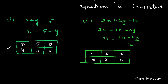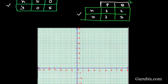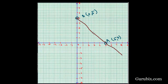We label the points: this is point A and this is B for equation 1, and point P and Q for equation 2. From the table of equation 1, the points are (5, 0) and (0, 5). Point A is (5, 0) and point B is (0, 5). We draw a straight line through these two points A and B — this line represents x plus y equals to 5.